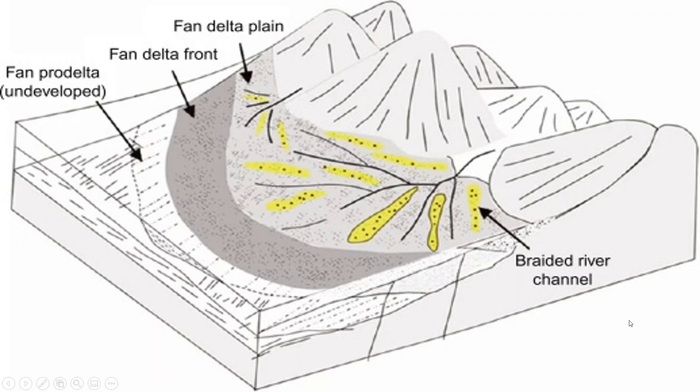There is one more type of delta to mention. A fan delta is a sort of pseudo-delta in the sense that it is not fed by a river, and is instead the result of an alluvial fan expanding into a standing body of water like a regular delta.